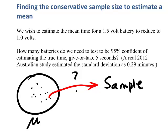We'd expect that the true population mean would be close to the sample mean, x-bar. Now, the sample mean may be a little bit higher or a little bit lower than the true population mean, but we'd expect it to be fairly close. In other words, there's going to be an interval surrounding the sample mean in which we'd expect to find the true value of that population mean.